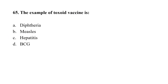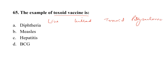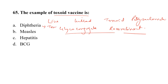Question number 65. The example of a toxoid vaccine is: Option A, diphtheria; Option B, measles; Option C, hepatitis; Option D, BCG. Vaccines are of six types: live vaccine, killed vaccine, toxoid, polysaccharide, glycoconjugate, and recombinant. Diphtheria falls under the category of toxoid; measles is a live vaccine; hepatitis is recombinant; and BCG is live. The correct option is A — the vaccine against diphtheria is a toxoid vaccine.